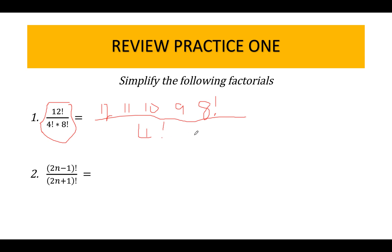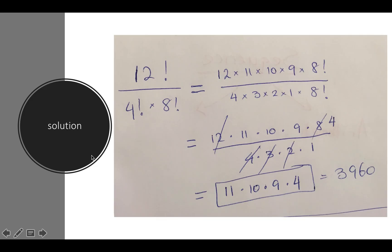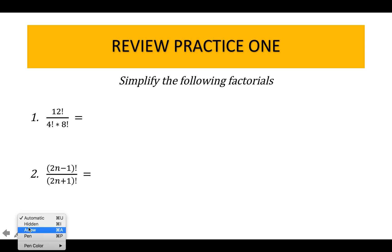The next one: 2n minus 1 factorial over 2n plus 1 factorial. This one is an easy one. The hint I'll give you is start with the bottom first, start with the denominator. You have 2n plus 1, and then you go down to 2n, and then what's next?